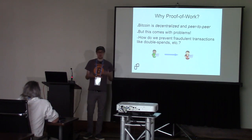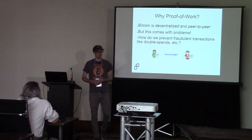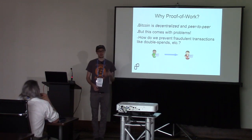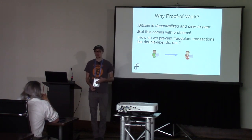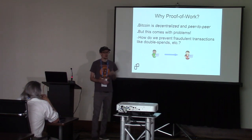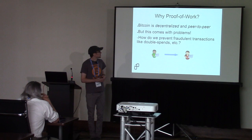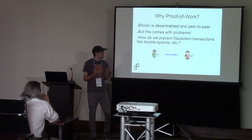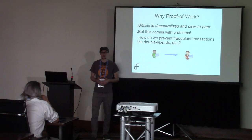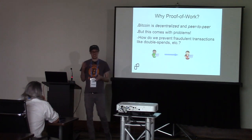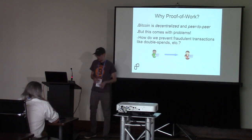We know Bitcoin has no intermediaries. Bitcoin is a completely peer-to-peer and decentralized system of money. This is fantastic, but it comes with some fundamental issues — how do we prevent fraud? How do we prevent transaction issues like double spends that the chain of digital signatures and blockchain ledger doesn't solve on its own?